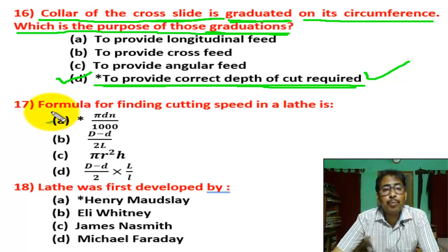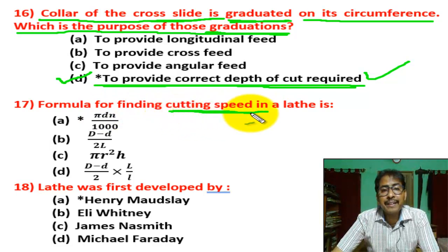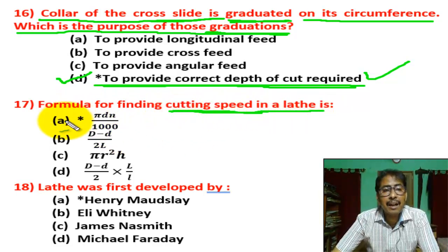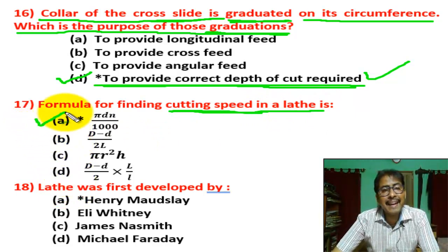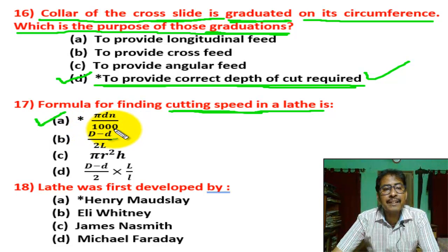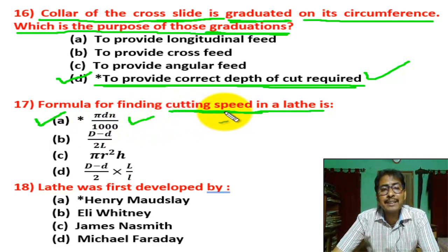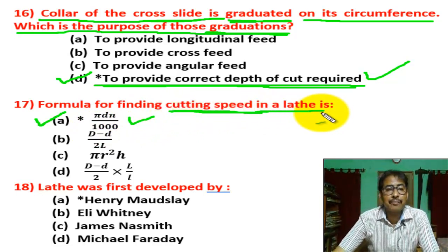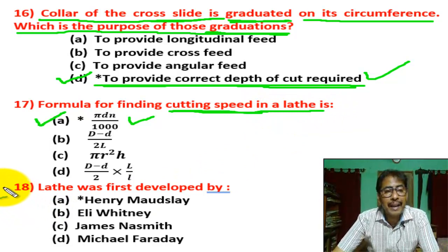Question number 17: the formula for finding cutting speed in a lathe is? There are four options. Correct answer is A — π D N / 1000. This is the formula for cutting speed in a lathe.